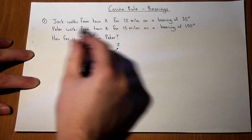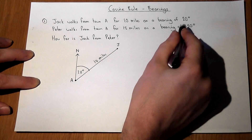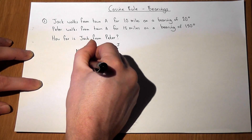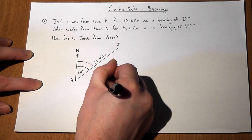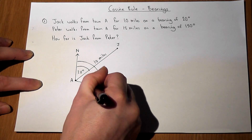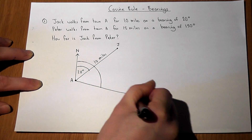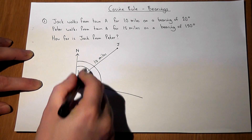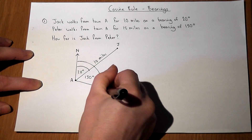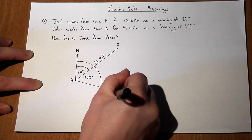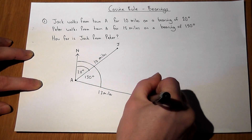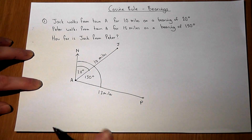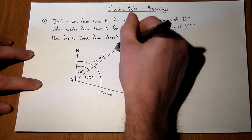Now Peter walks further on a larger bearing. The full angle is 130 degrees — that's the entire angle around — and he walks 30 miles. So here is Peter over there somewhere. The question is: how far is Jack from Peter?